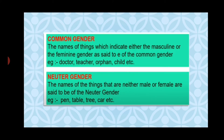Common gender refers to names of things which indicate either masculine or feminine — they can be a male or a female. For example, doctor: you have seen lady doctors and also male doctors. Teacher: I am your teacher and Bhavish sir is a male teacher. Orphan, child — a kid can be both a girl or a boy. These are examples of common gender.